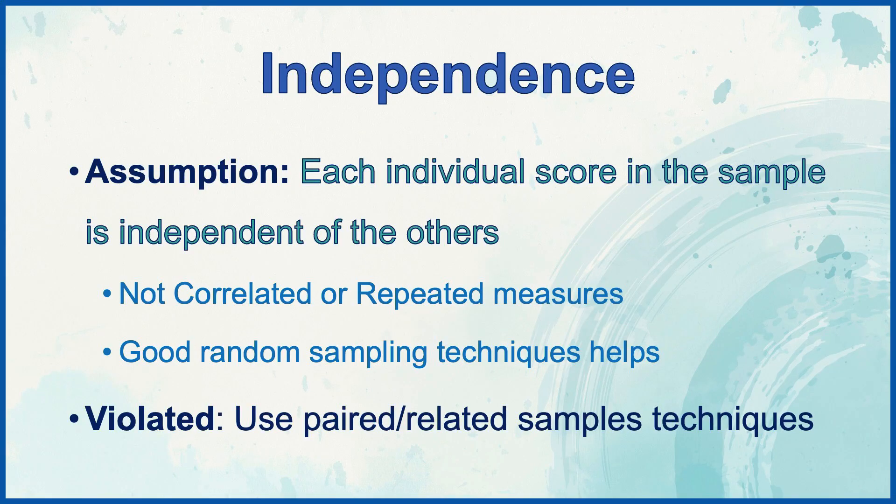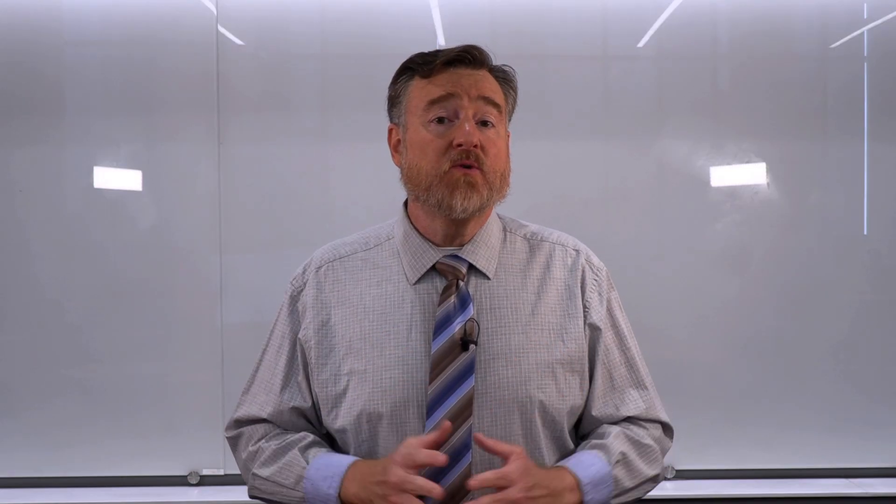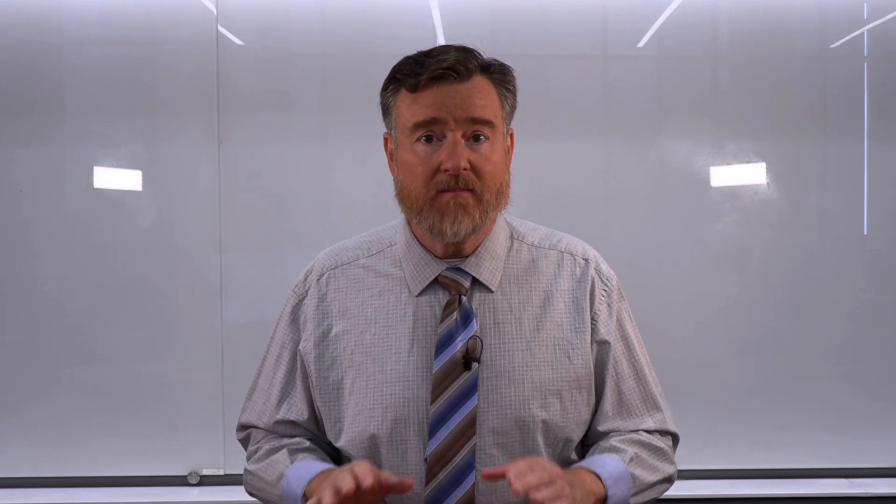The second assumption that can be met during research design is the independence of scores. Each individual score in the sample should be independent of the others — there is no influence or connection between those scores; they're not correlated, they're not repeated measures. This is also an assumption that is very easy to meet during your research construction, partly by using good random sampling techniques so that you know that each score is independent of the others. However, if you do not have independent data, if you have repeated measures or before-and-after data, that is no problem at all as long as we know that before we do data collection.